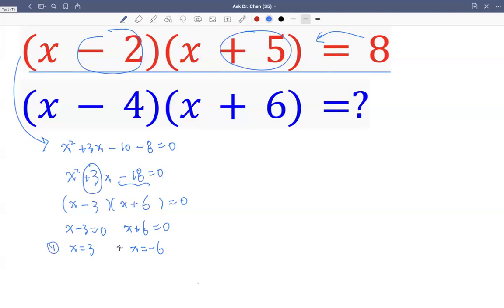So let's call this the first solution. For x equals three, we have three minus four and three plus six. Three minus four is negative one, three plus six is nine, so we get negative nine. That's one solution.